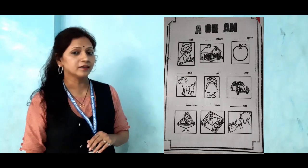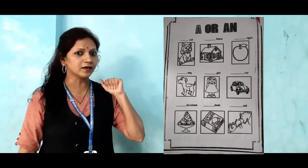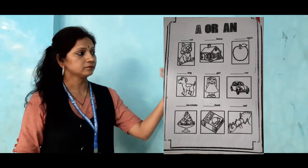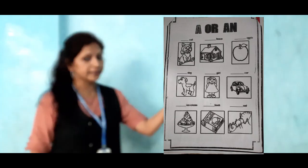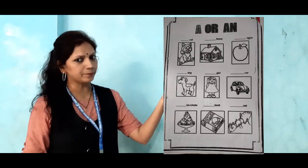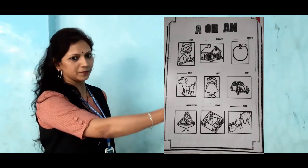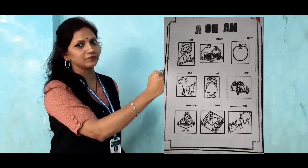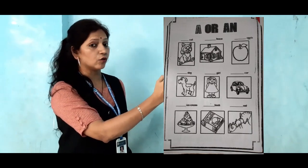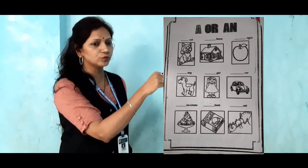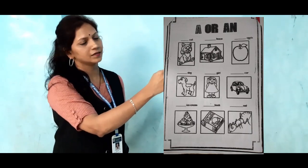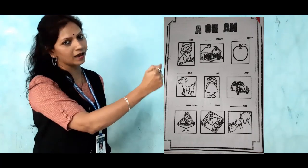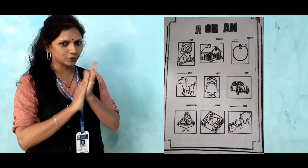Now next, Shri Dharani, are you giving the answer? Now read the next word. It is apple. Look at the picture and the spelling. Apple starts with the letter A. So what to write here — how to use A or an? Here you have to use an. An apple. Very good.